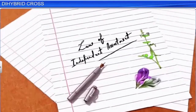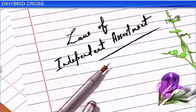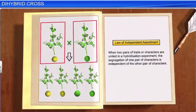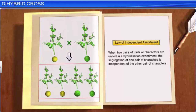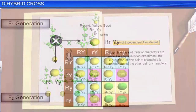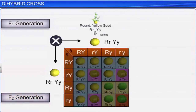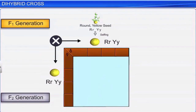From such observations on dihybrid crosses, Mendel proposed a new set of generalizations, which was later called the law of independent assortment. According to this law, when two pairs of traits are united in a hybridization experiment, the segregation of one pair of characters is independent of the other pair. We can use the Punnett square to understand the independent segregation of the two genes during meiosis.